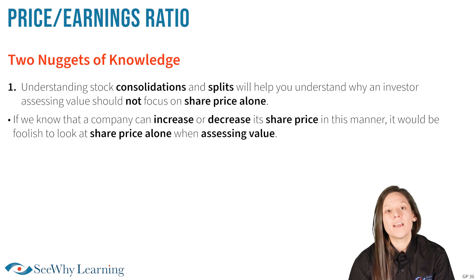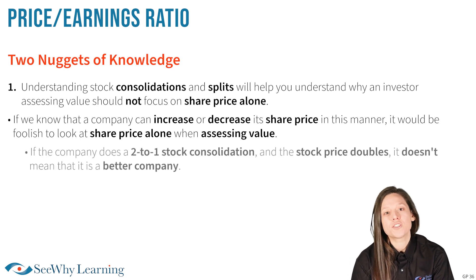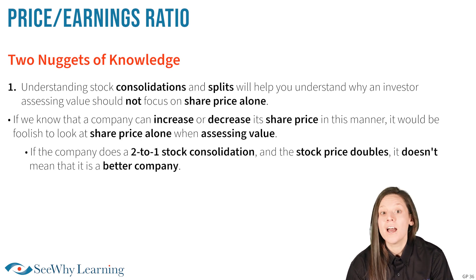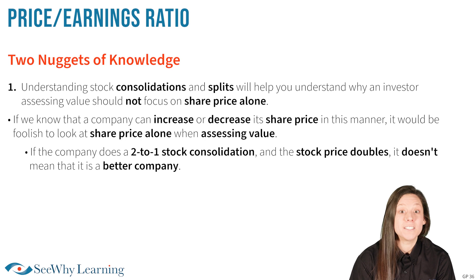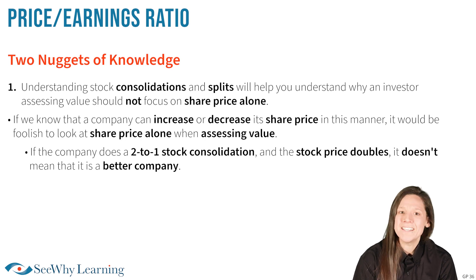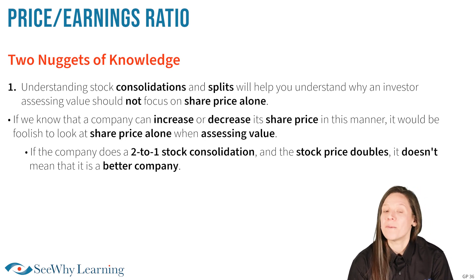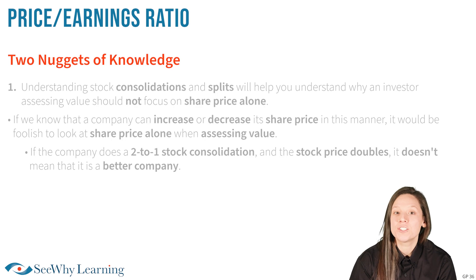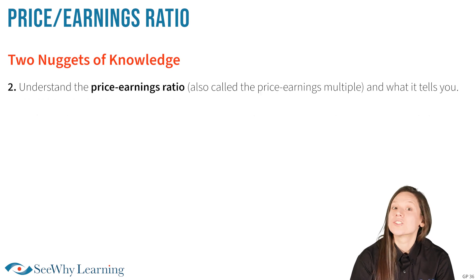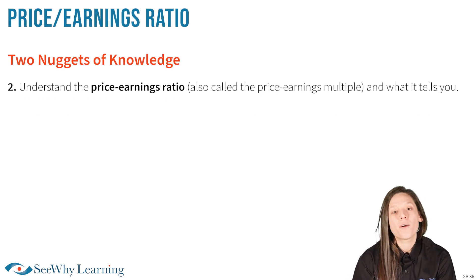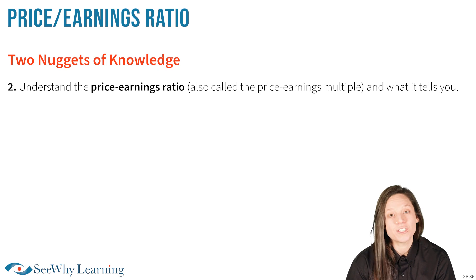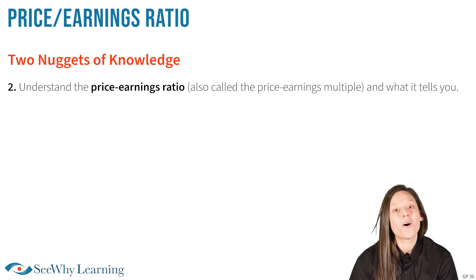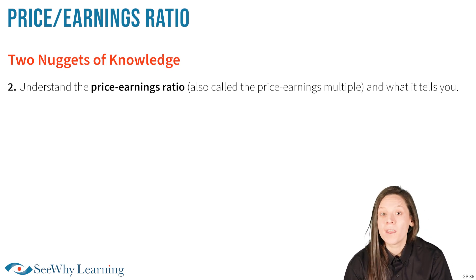For greater clarity, if the company does a two-to-one stock consolidation and the stock price doubles, it doesn't mean that all of a sudden it's a better company. This brings me to nugget number two, which applies directly to this question: understand the price-earnings ratio, also called the price-earnings multiple, and what it tells you.